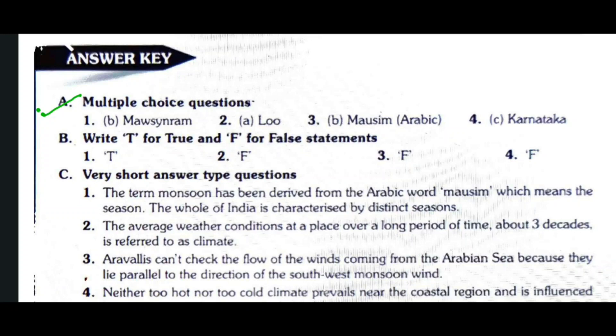First question: The heaviest rainfall in the world occurs at — options are Cherrapunji, Mawsynram, Meghalaya, and Kerala. The answer is option B, Mawsynram. Question number two: The hot, dry and dust-laden wind that blows in North India in the months of May and June is called — Loo, Mango Shower, Kalabaisakhi, or all of these. The answer is option A, Loo.